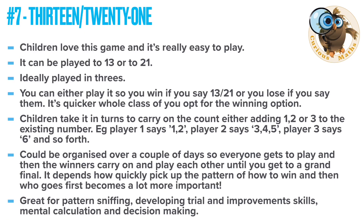Number seven is 13 or 21 — the same game with just different end numbers. It's a strategy game and lots of children already know it, so it'll be really easy to adapt online. The idea is that you can either add one, two or three to the existing number — your choice. The aim is to either say the number 13, if that's the winning rule you've decided on, or not say 13 if that puts you out of the game. There's an example on the screen of how it works. You can organise this really nicely over a week — have a game a day and the winner stays on. It's really good for children making decisions and getting everybody involved.